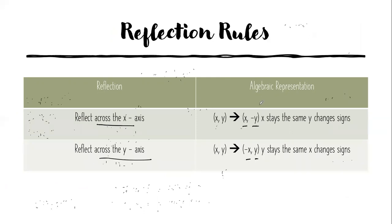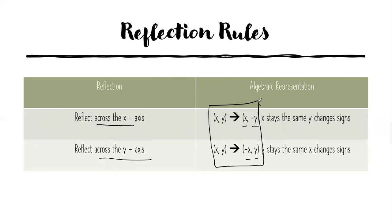These are the two rules you have to memorize. They're not on a formula chart — it's just memorization. Reflect across the x-axis: (x, -y) — x stays the same, y changes signs. Reflect across the y-axis: (-x, y) — x changes signs, y stays the same. In a normal in-person class these would be no-note quizzes memorized every class period.